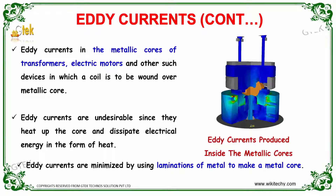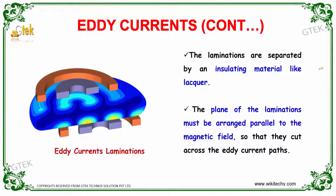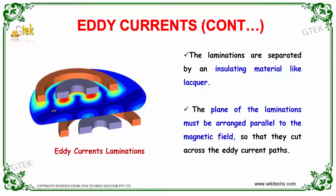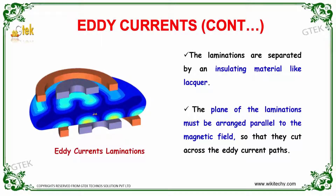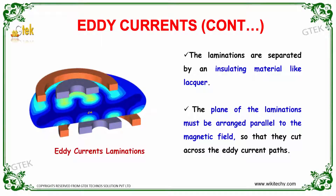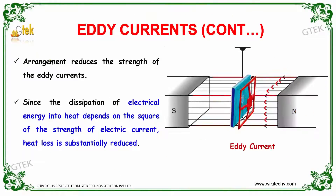Eddy Currents can be minimized by using lamination of metals to make a metal core. The laminations are separated by an insulating material like lacquer. You are able to see the lamination shown here. The plane of the laminations must be arranged parallel to the magnetic field so that they cut across the Eddy Current paths. This arrangement reduces the strength of the Eddy Currents.